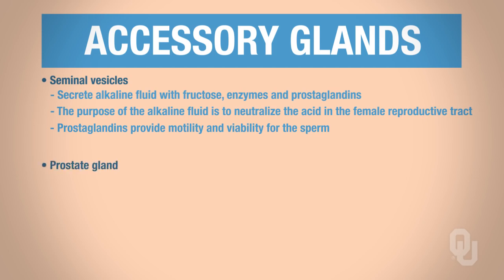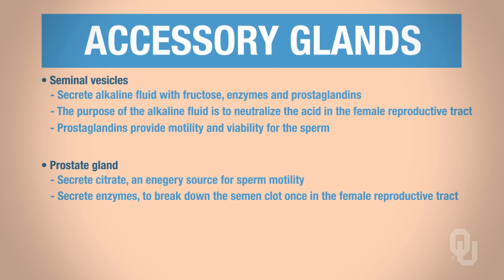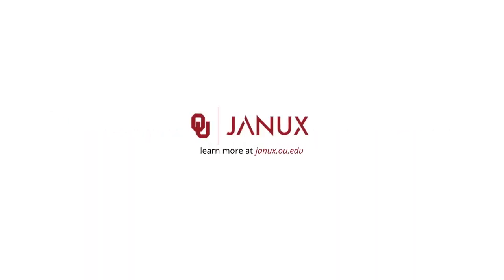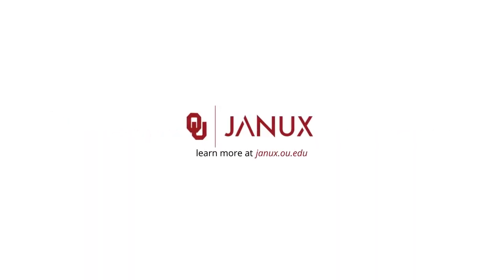The prostate gland is another accessory gland. It secretes citrate, which is an energy source for sperm motility, and enzymes that break down the semen clot once it is in the female reproductive tract. Semen clots during ejaculation and is then broken down inside the female reproductive tract. The last accessory gland is the bulbourethral glands, which secrete a fluid containing mucus that serves as a lubricant.